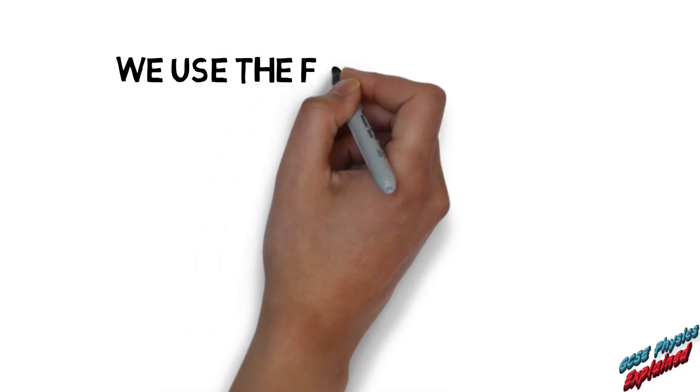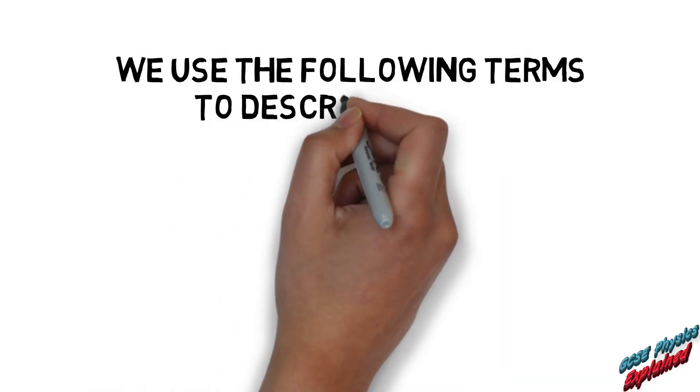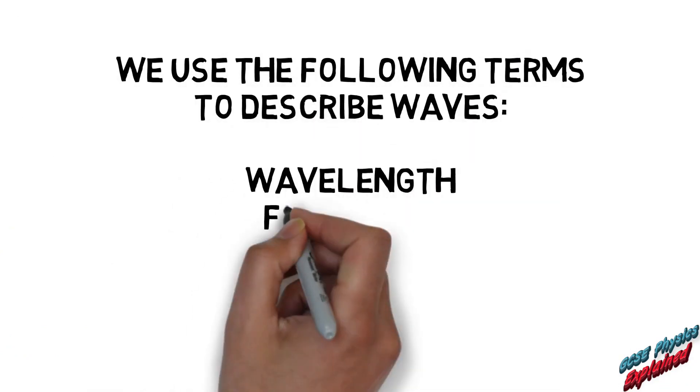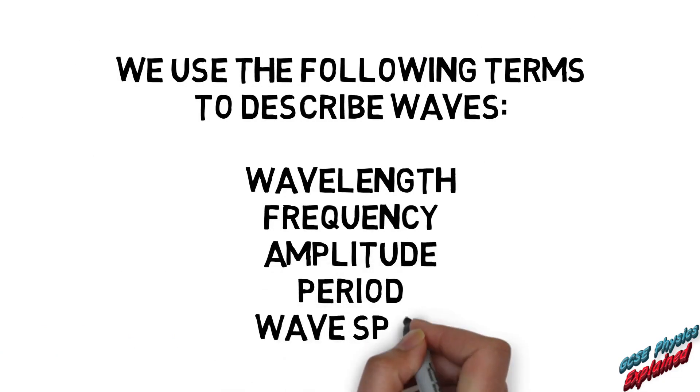We use the following terms to describe waves: wavelength, frequency, amplitude, period, wave speed.